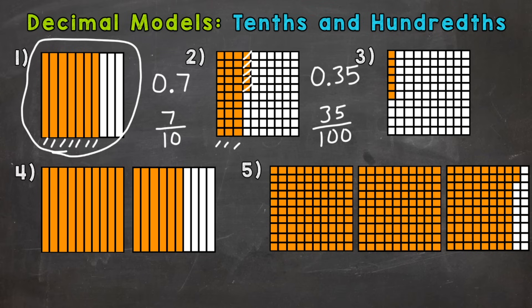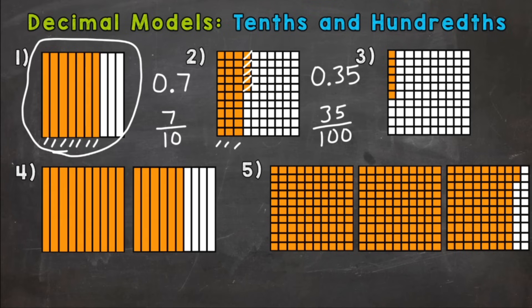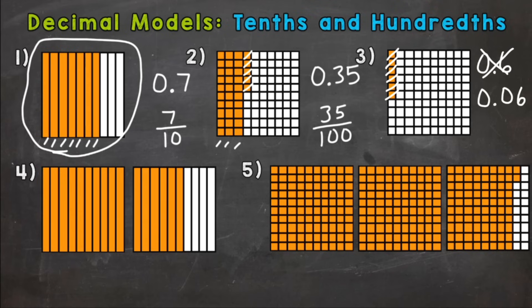On to number three, where again we're going to be working with hundredths. This time we don't have any full columns, so we can just count the individual hundredths. For number three we have one, two, three, four, five, six hundredths. A very common mistake would be writing it as zero wholes, decimal, and then a six in the tenths place — that represents six tenths. We don't want six tenths, we want six hundredths. So we need zero, decimal, a zero in the tenths place to push that six over to the hundredths place: zero point zero six. Or in fractional form, six over one hundred.